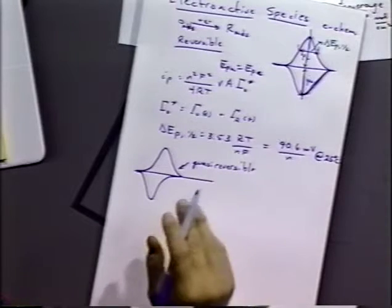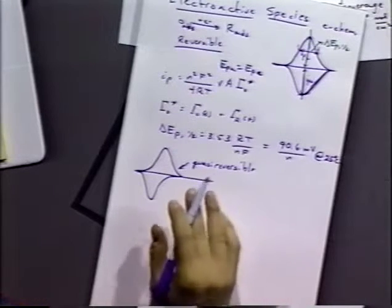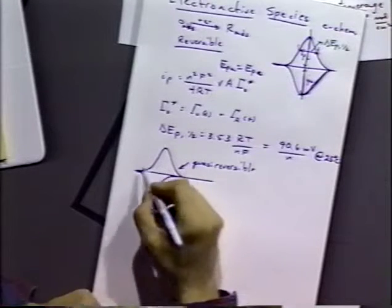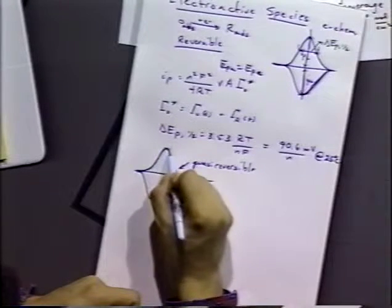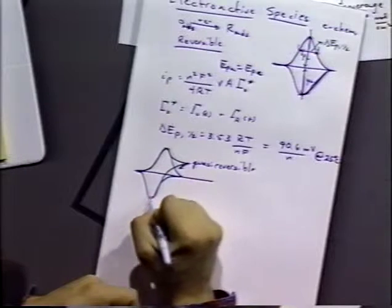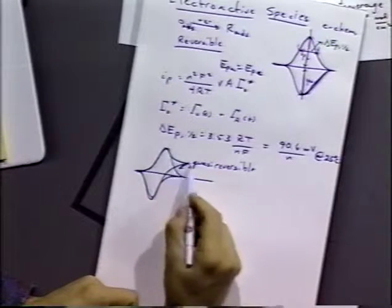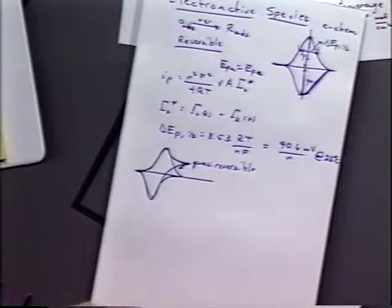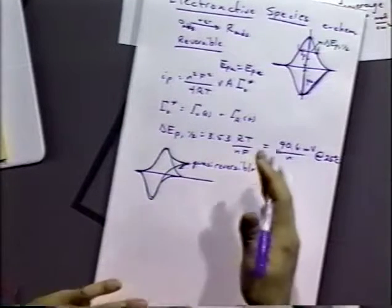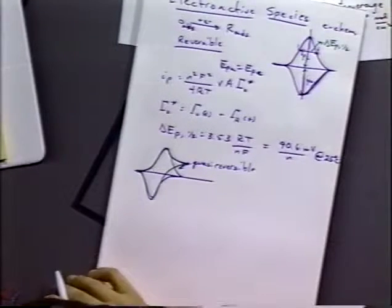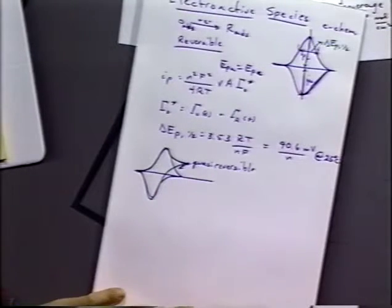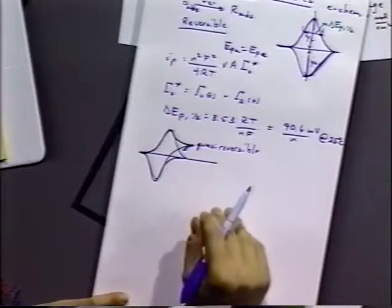But notice that the current drops to zero in this quasi-reversible adsorbed case, which would not be the case for a diffusional-based process. You'd always see for diffusion a curve that would be more like that, or you'd see a curve above zero. So that's one way to tell the difference between adsorption and diffusion, is look for that going down to zero.